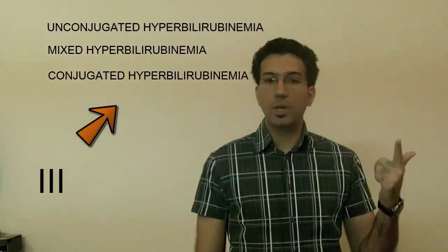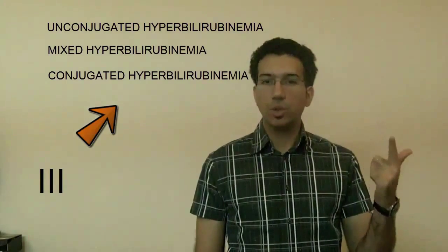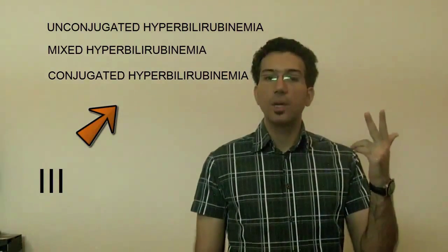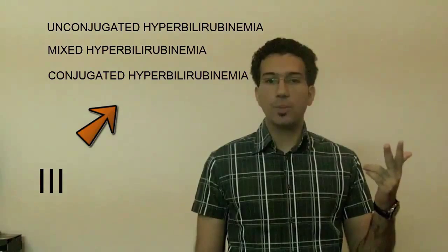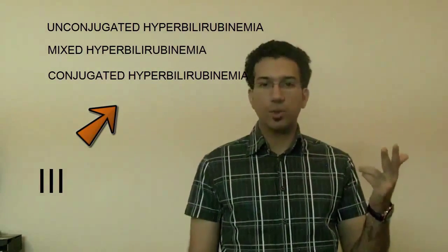Mixed hyperbilirubinemia, in which the conjugated bilirubin is from 20 to 50% of the total bilirubin. And conjugated hyperbilirubinemia, conjugated bilirubin is more than 50% of the total bilirubin.